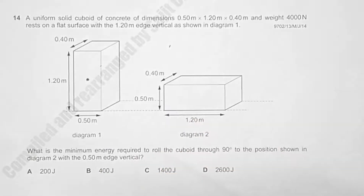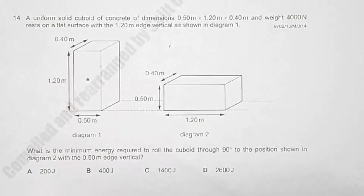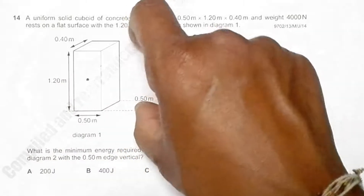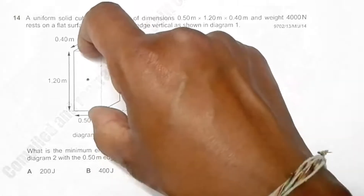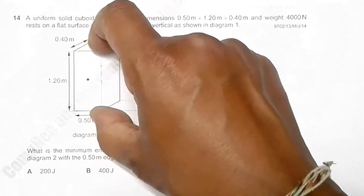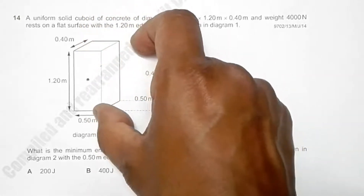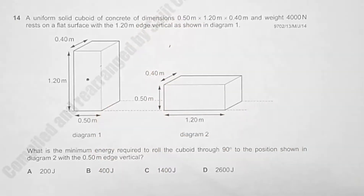One key thing to realize is that we do not need to apply force all the way through the full rotation. We simply need to apply force until the cuboid reaches the tipping point, after which it will just roll over on its own. So the minimum energy required is only to bring it to that critical tipping position.